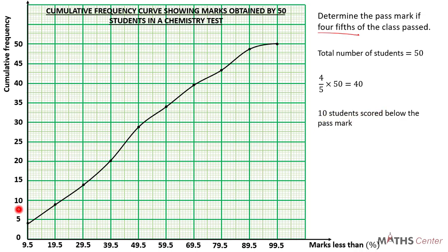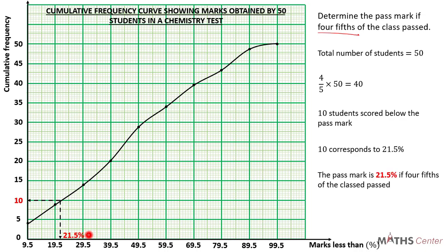To find the pass mark, we locate 10 on the cumulative frequency axis. Then we trace it to the curve, and from the point where it meets the curve we trace it to the horizontal axis — the marks less than axis — and read the value there. From my graph, the value there is 21.5%. This means those who scored marks less than 21.5% failed, so 21.5% is the pass mark.